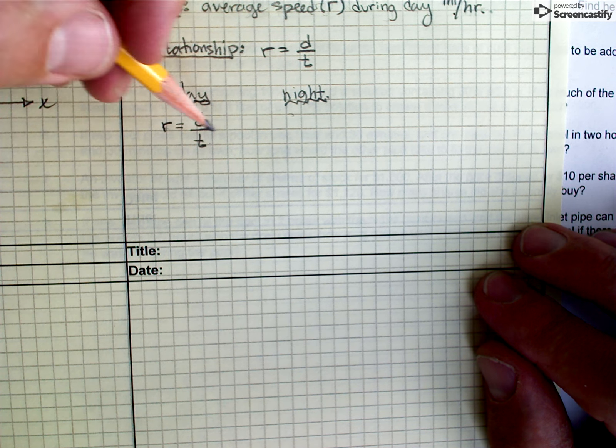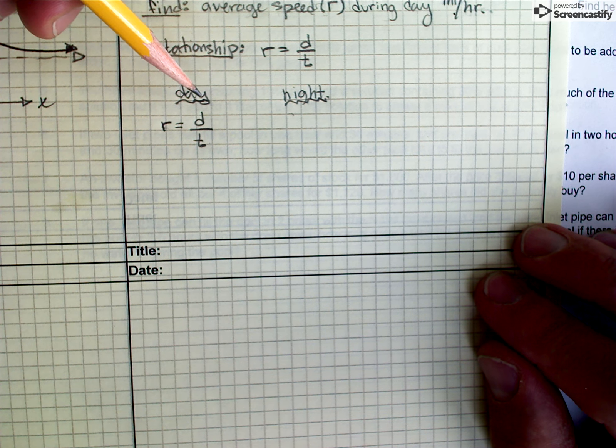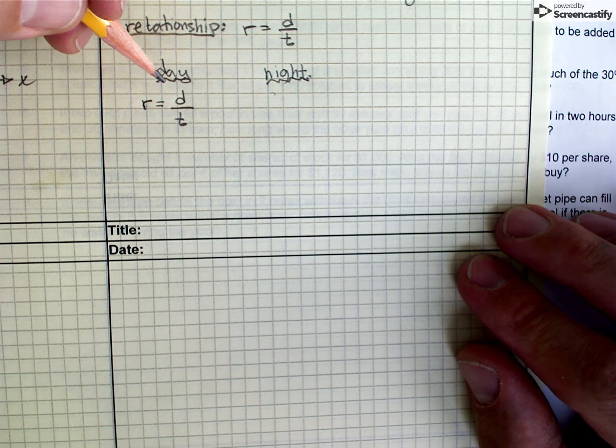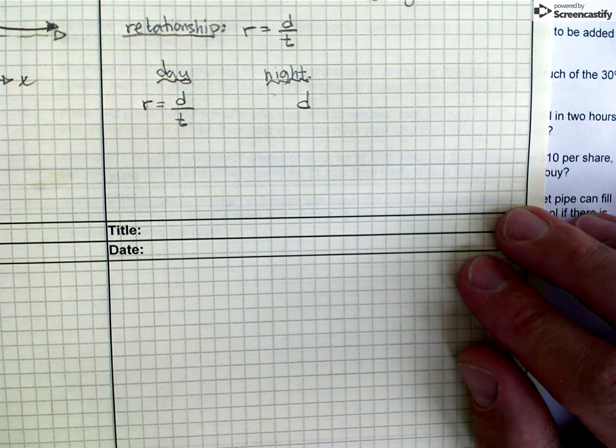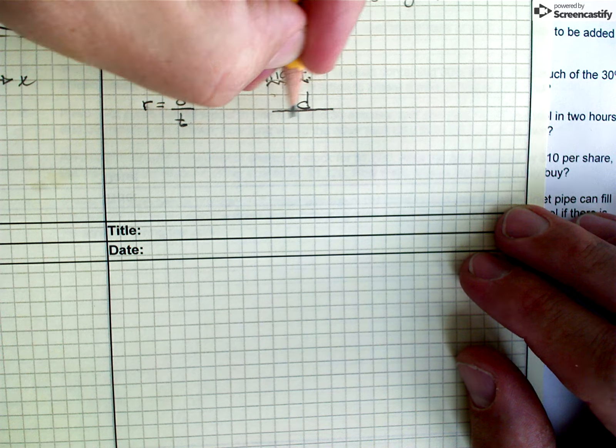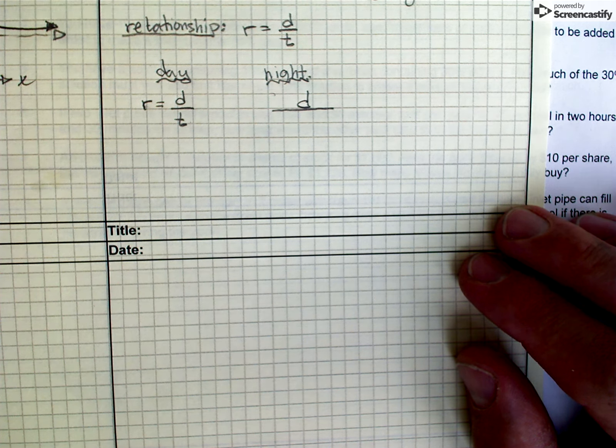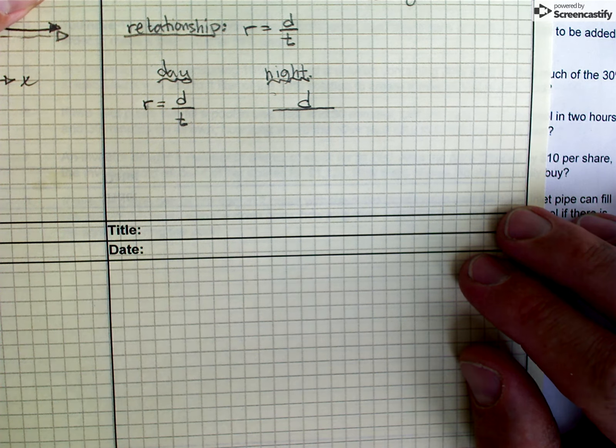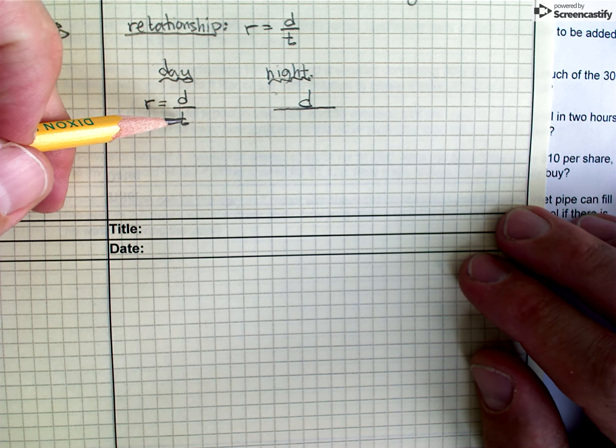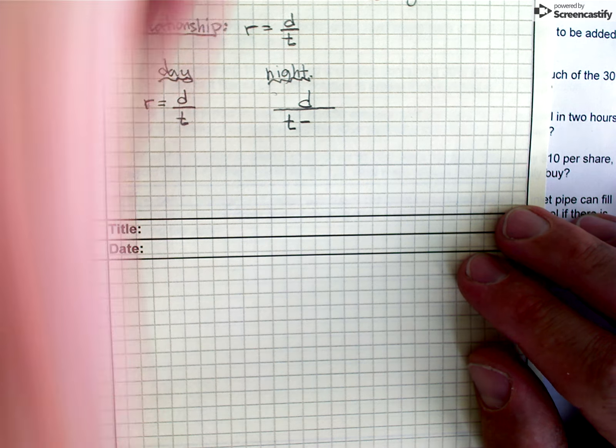And let me go over to the nighttime here and try to construct a relationship that also uses this rate equation, but using the information given to us in the problem. The first thing, I know that it's the same distance, so I can just put D right here. And then on the bottom, I have to put how much time it takes to do this trip during the night. And what we're told in the problem is that it's 36 minutes less time than it is during the day. So initially, I just want to do T minus 36 minutes.